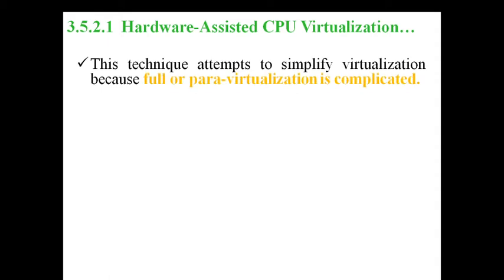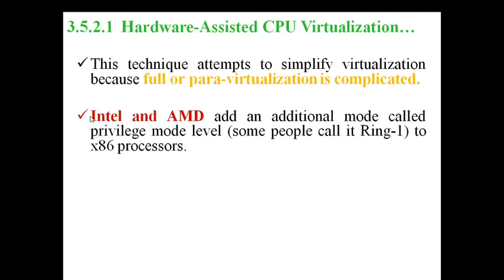Now, hardware-assisted CPU virtualization: how is hardware assistance used for CPU virtualization, meaning how are critical and non-critical instructions executed in the CPU? This technique attempts to simplify full or para virtualization, which is complicated. Full or para virtualization is tough to execute; hardware assistance makes it easier. Intel and AMD processors provide two concepts: ring 0 and ring 1. The privileged mode level is called ring 1, and you can classify privileged versus unprivileged instructions using this ring concept.